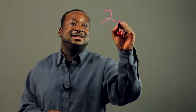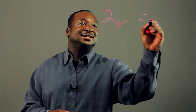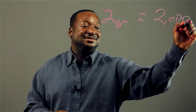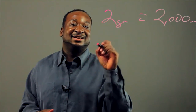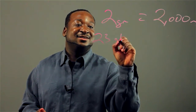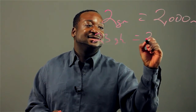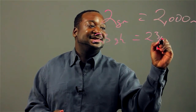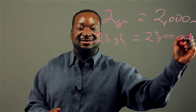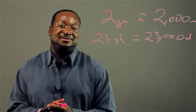So 2 gigahertz equals 2,000 megahertz, or 23 gigahertz equals 23,000 megahertz. You just multiply by a thousand.